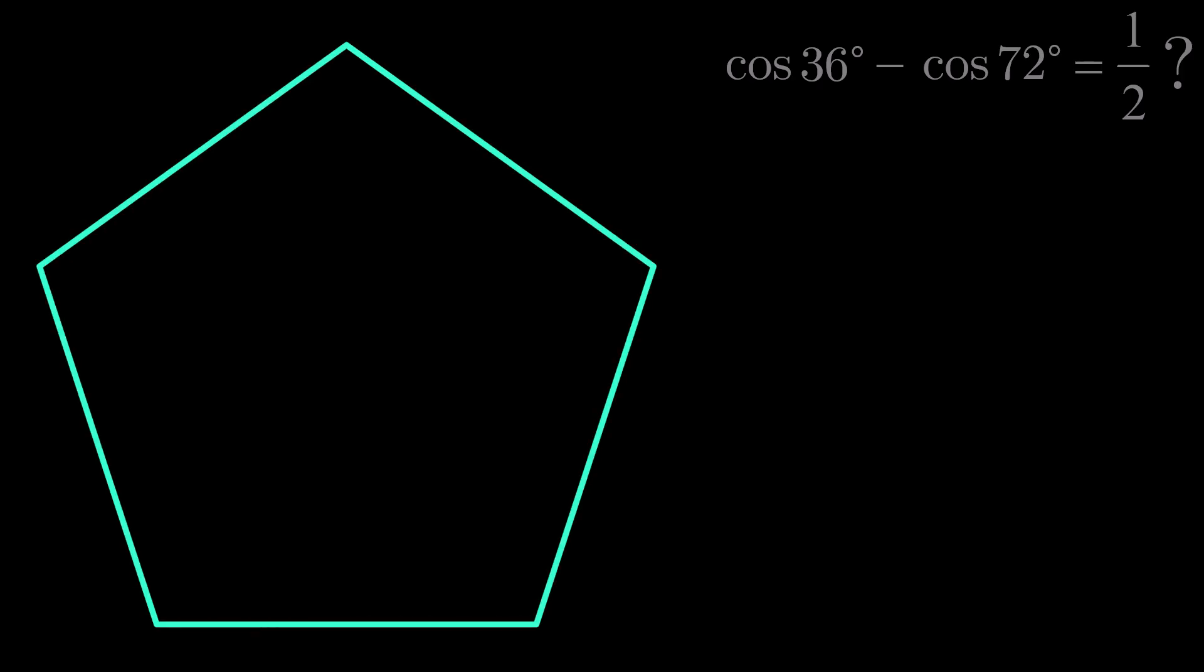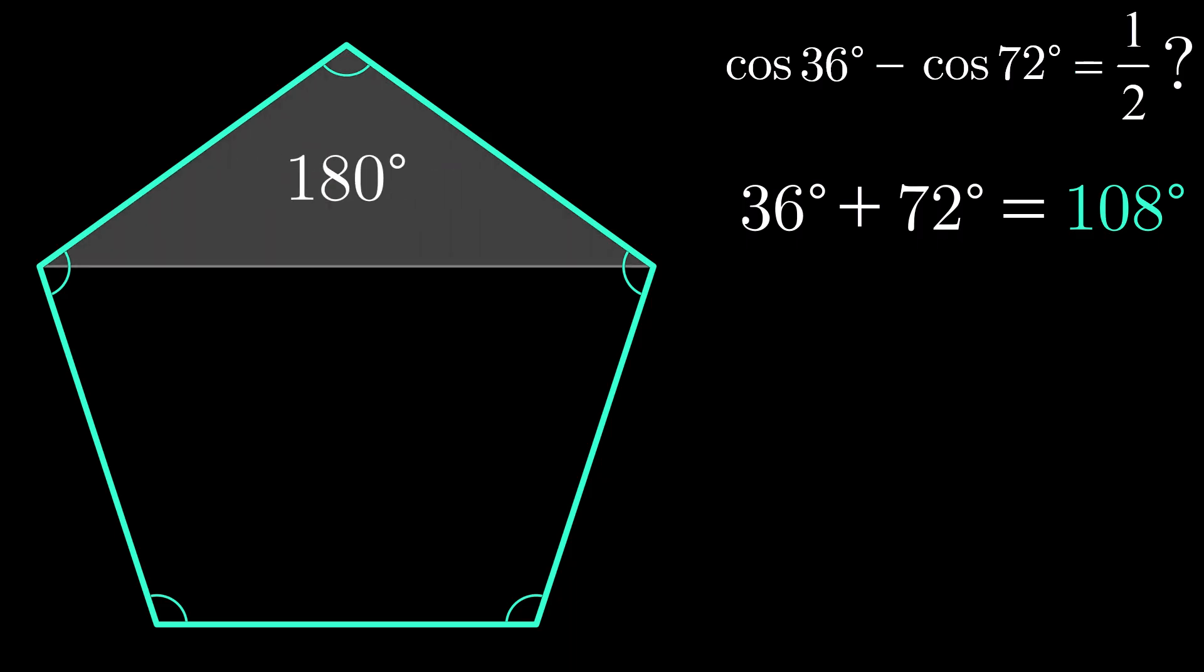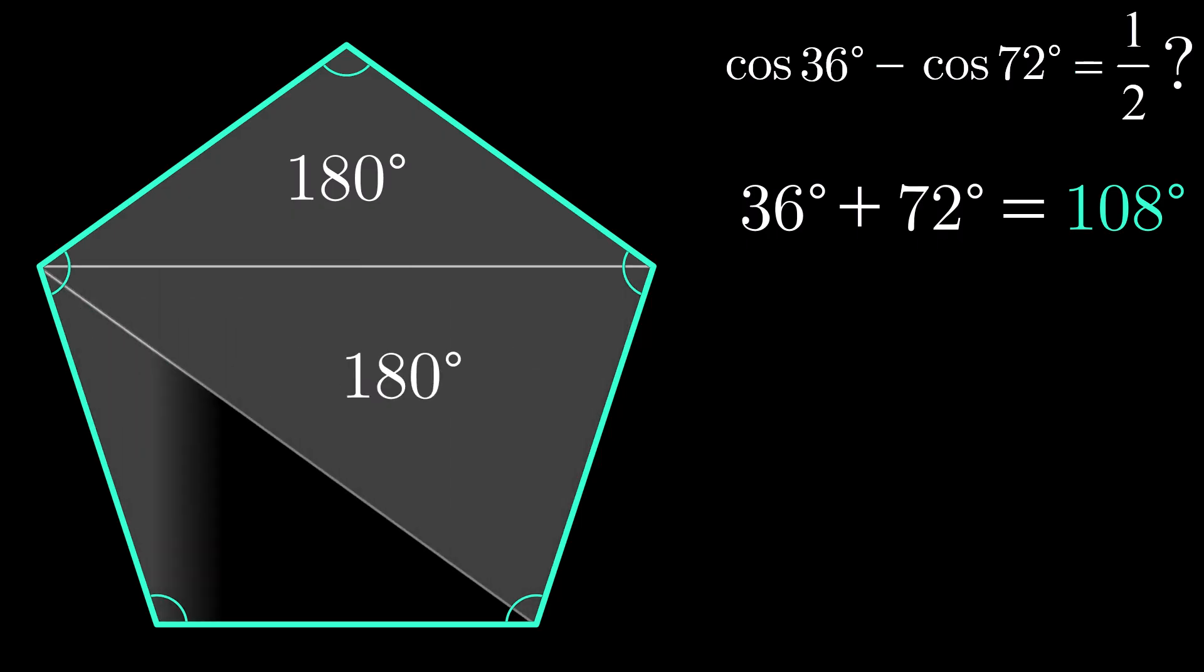Why a pentagon? Well, notice that 36 degrees plus 72 degrees equals 108 degrees, which is the measure of each interior angle of a regular pentagon. A property that can be quickly verified by noting that the sum of a pentagon's interior angles is equal to the sum of the interior angles of three triangles.